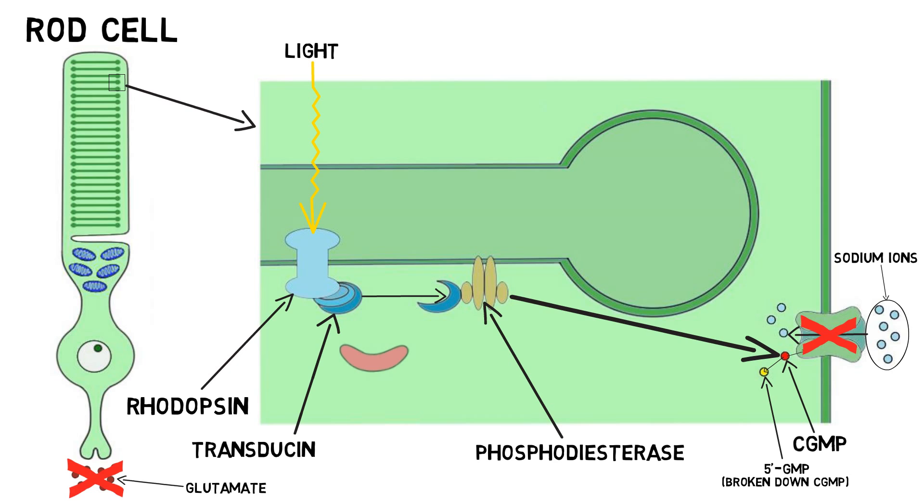The rod cell returns to its normal state quickly when activated rhodopsin is inactivated, and a protein called arrestin subsequently binds to it. Arrestin blocks the ability of rhodopsin to activate transducin, which makes the cascade unable to continue. A complex process then restores retinal to its original configuration, making it ready to absorb light once again.